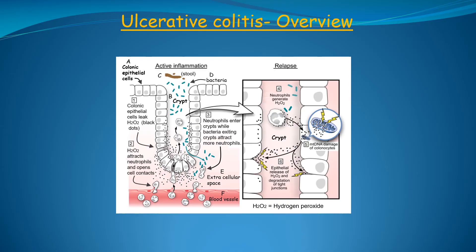The image on the left shows a single microscopic crypt that is made up of colonic epithelial cells, highlighted by the red circle and labeled with the letter A. These are the cells that cover the inner surface of the colon. Together, these cells make up the colonic epithelium. There are millions of these crypts covering the inner surface of the colon. Next, we have the crypt itself, which is the space surrounded by the colonic epithelial cells.